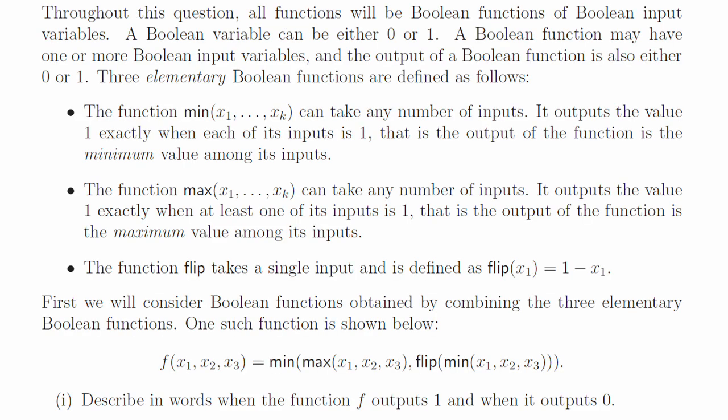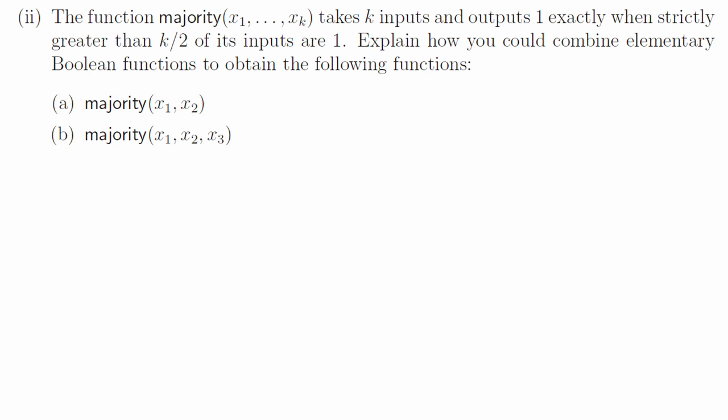Question 7, part 1. This function is 1 if and only if at least one of its inputs is 1 and at least one of its inputs is 0. Part 2a. Majority of x1, x2, you need both of them to be 1. That's min of x1, x2. Part 2b. Majority of 3 things, we need at least 2 of them to be 1. One way to write this is max of 3 things, min of each pair.